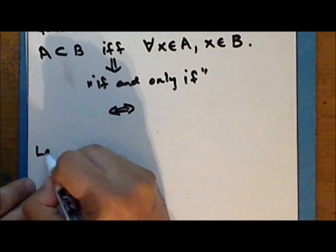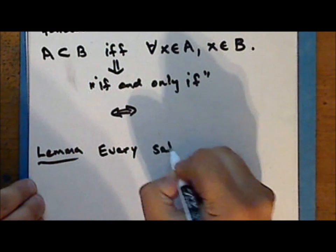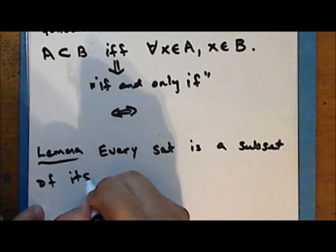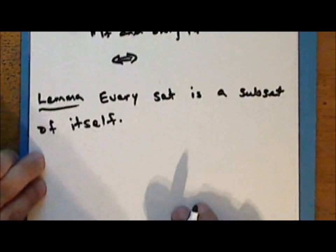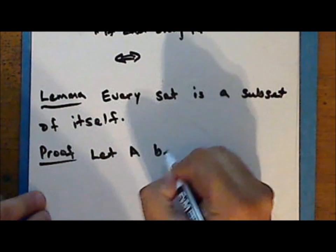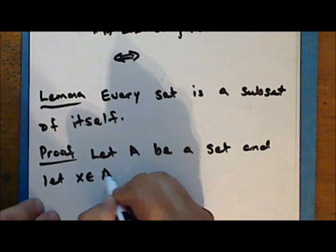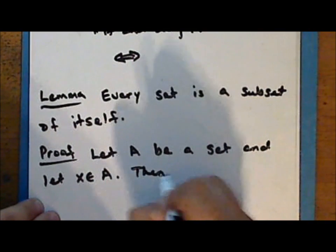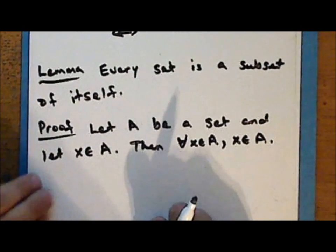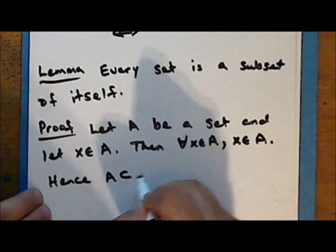So now we are ready to prove our first lemma: every set is a subset of itself. Proof: Let A be a set and let x be an element in the set A. Then for every element x in the set A, that element remains in the set A. Hence, by the definition of subset, A is a subset of itself.